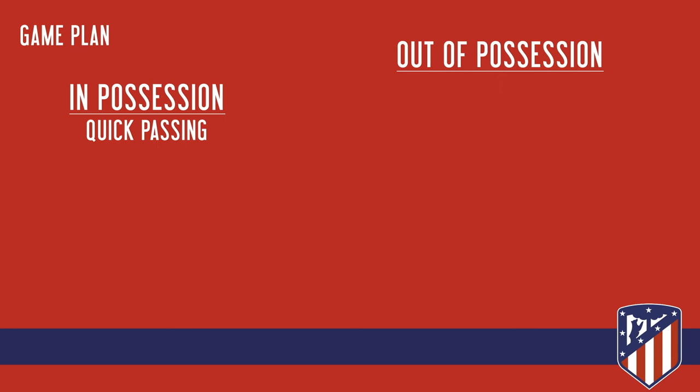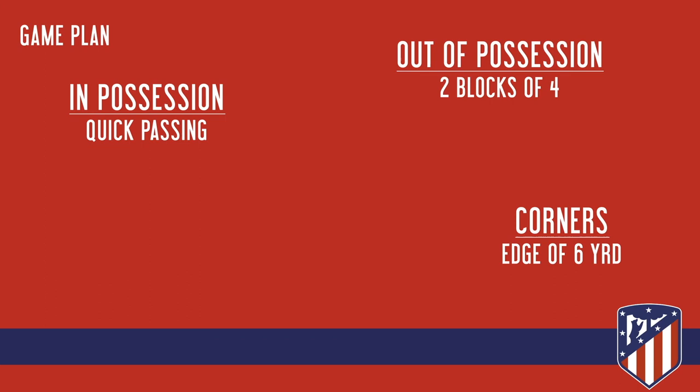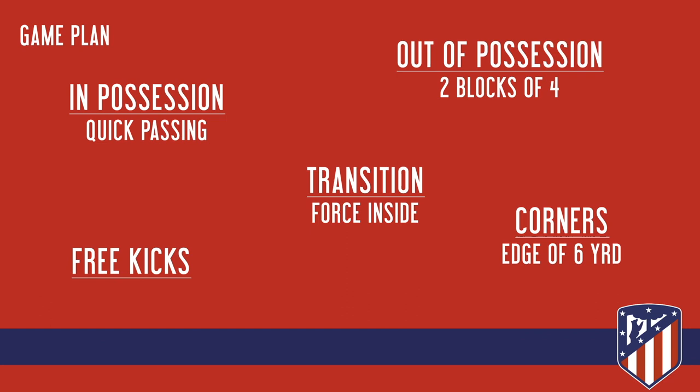Game plan: in possession — quick passing to get through their midfield. Out of possession — two banks of four with two forwards, low-level press, limiting the space between midfield and defence. Corners — target the edge of the six-yard box on both sides, but be aware of them going short to entice the defence out and play a ball around the back. In transition from defence to attack, force them inside where we have more players to disrupt the play, preventing the 2v1 overlaps. Free kicks — watch for Virgil van Dijk at attacking free kicks, especially on the edge of the box.